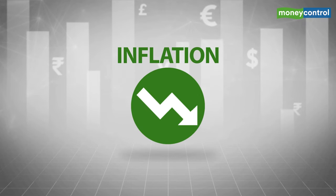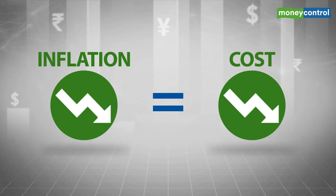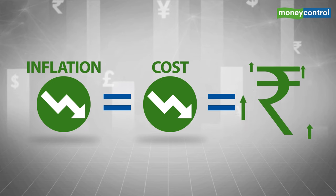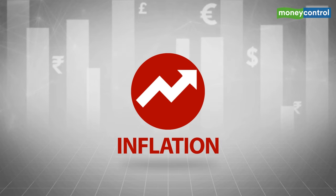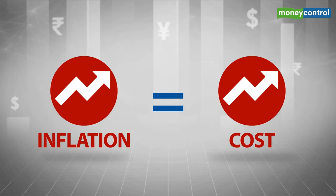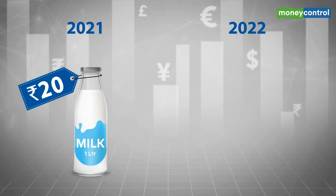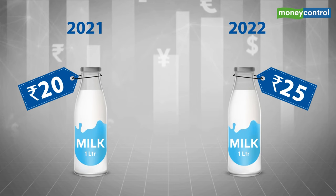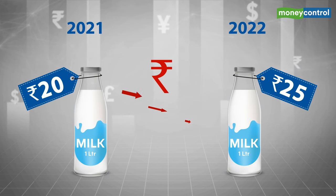When inflation is low, things are cheaper, which means you can buy more with one unit of currency. This means your purchasing power is higher, and higher purchasing power simply means the currency has more value. On the contrary, when a country's inflation rate is higher, items are more expensive, so you can buy less with the same amount of money. For example, suppose last year you could buy one litre of milk for 20 rupees, but this year you have to shell out 25 rupees for the same litre due to high inflation. The value of the rupee has dropped — you need more money to buy the same amount of stuff.